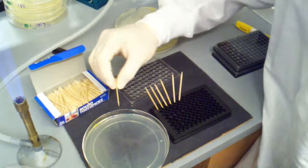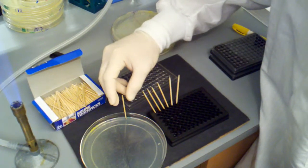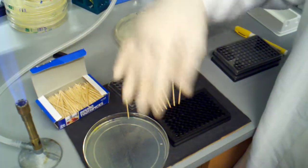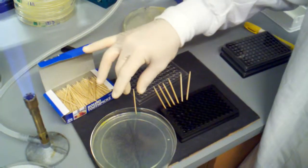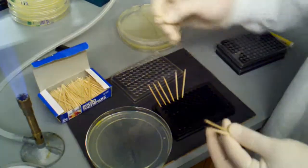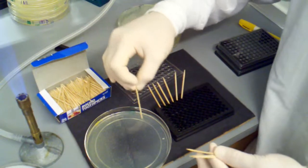But sometimes if you stab it, the toothpick will stand up, and you can stab a bunch of colonies. You get like 10 toothpicks on there, and then you can pull them out and inoculate your well. But this plate, the agar is a little bit too thin.